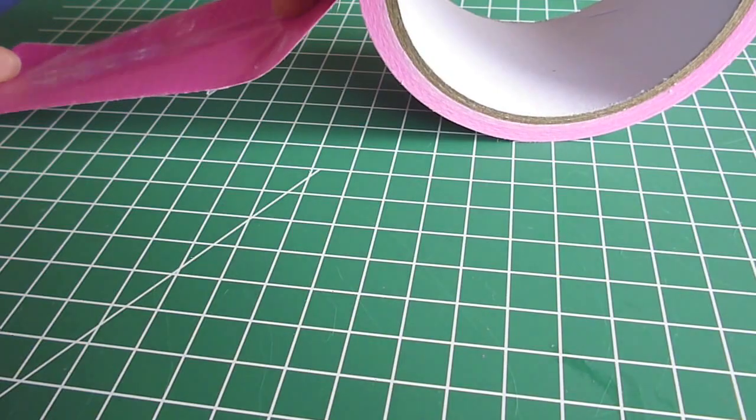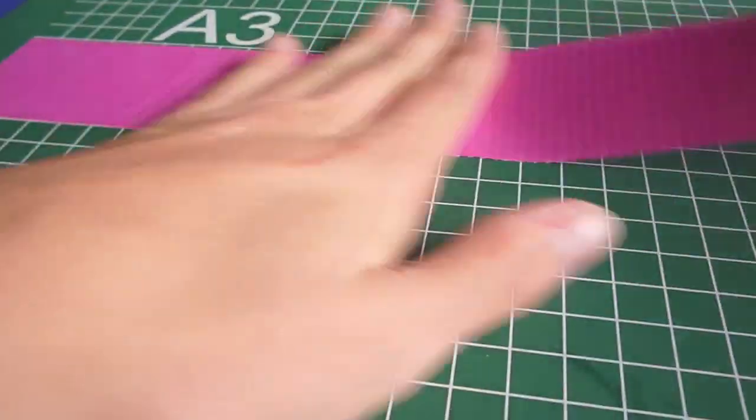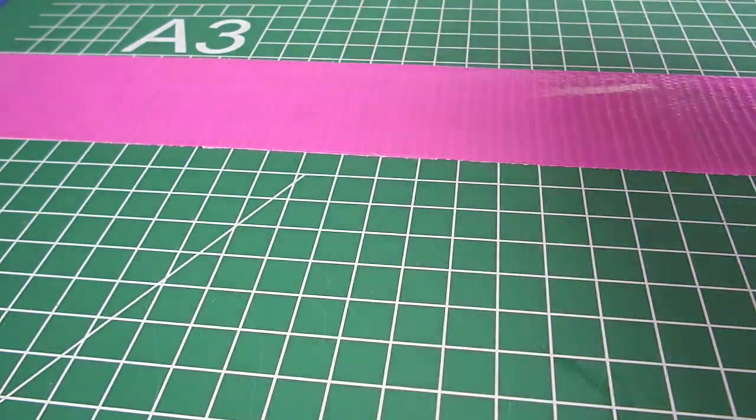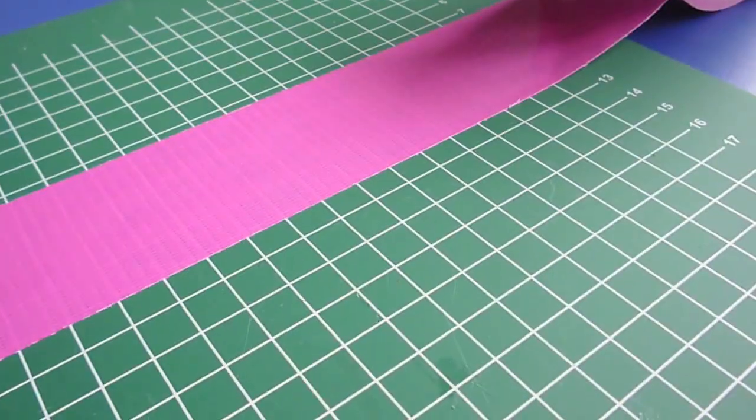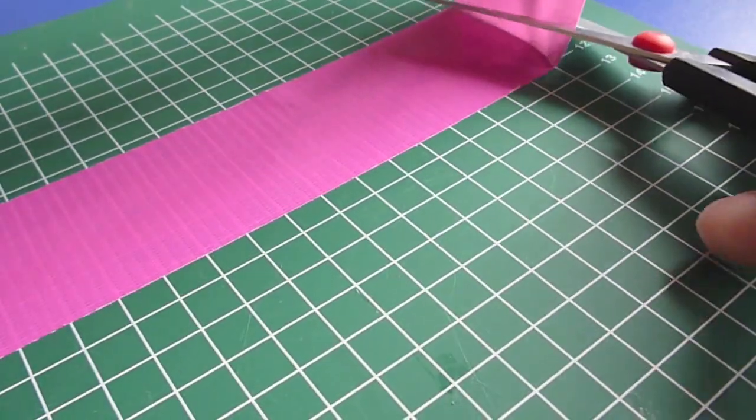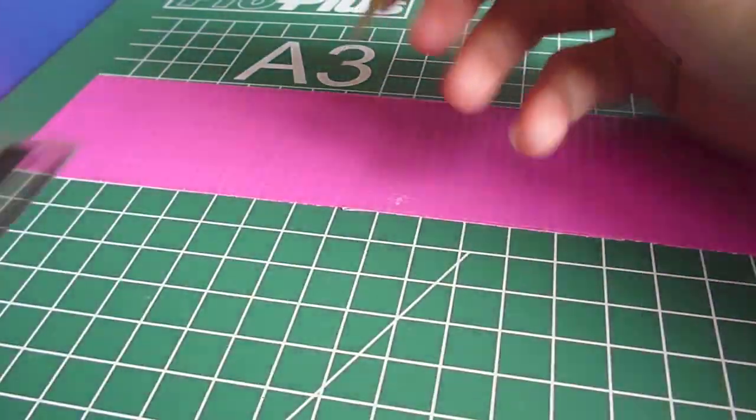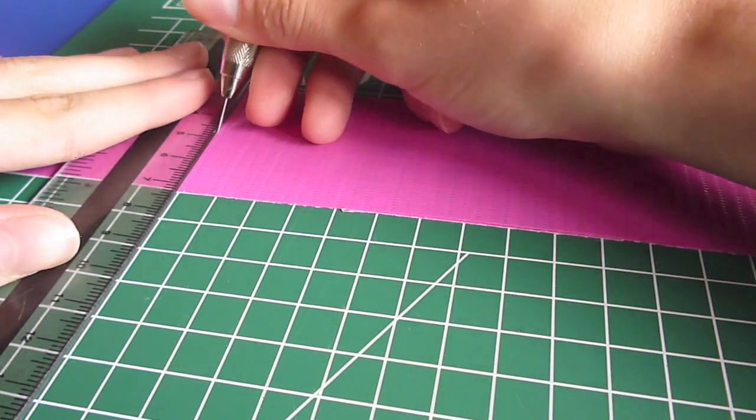First tape some duct tape to your cutting surface. Cut the tape in pieces of 5 cm.